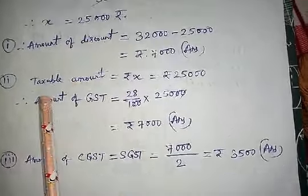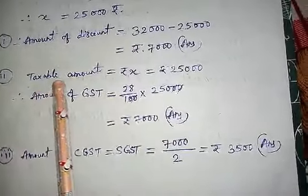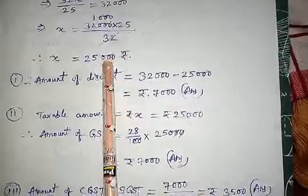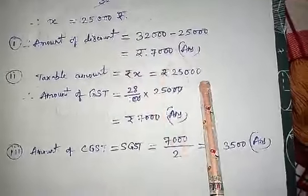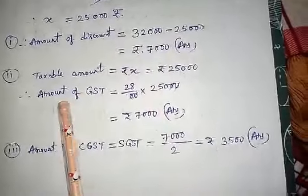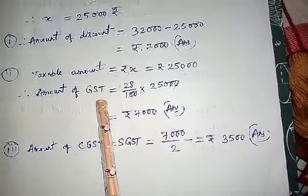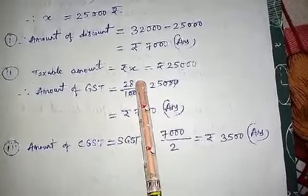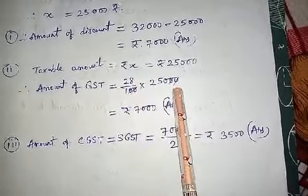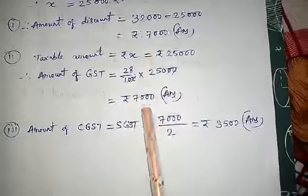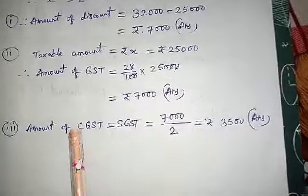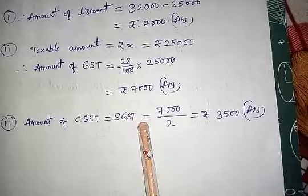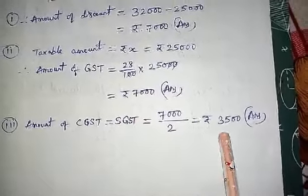Taxable amount is Rs. 25,000. GST = 28/100 × 25,000 = Rs. 7,000. Dividing GST by 2, both CGST and SGST = Rs. 3,500 each.